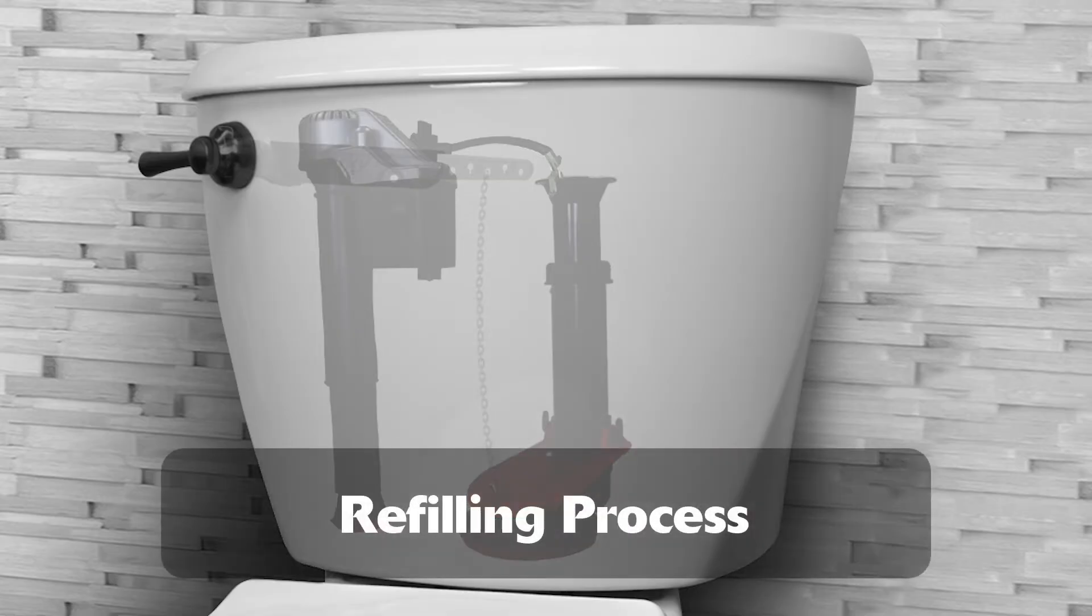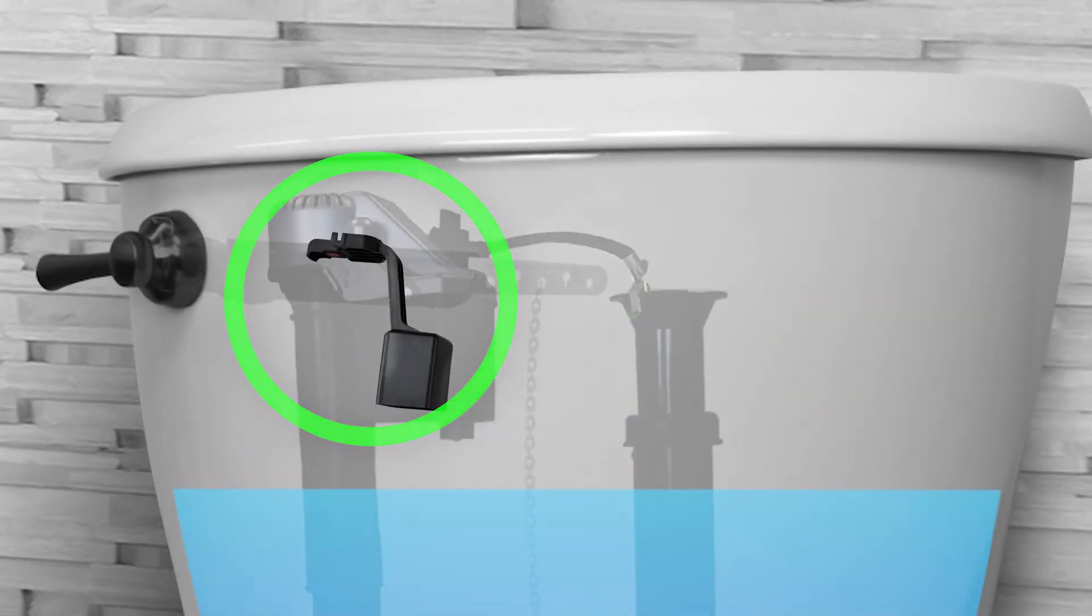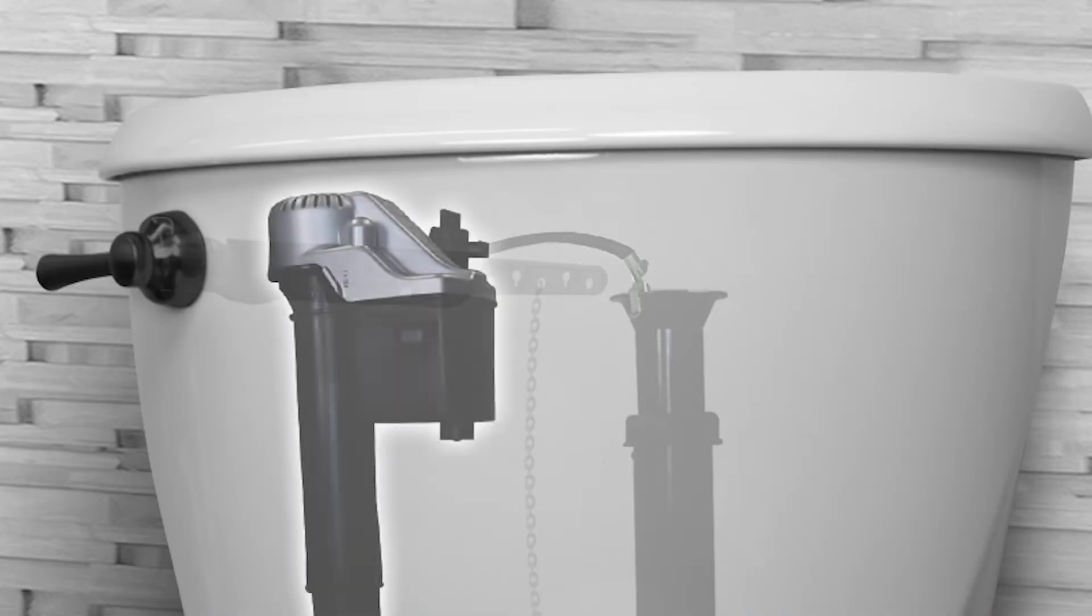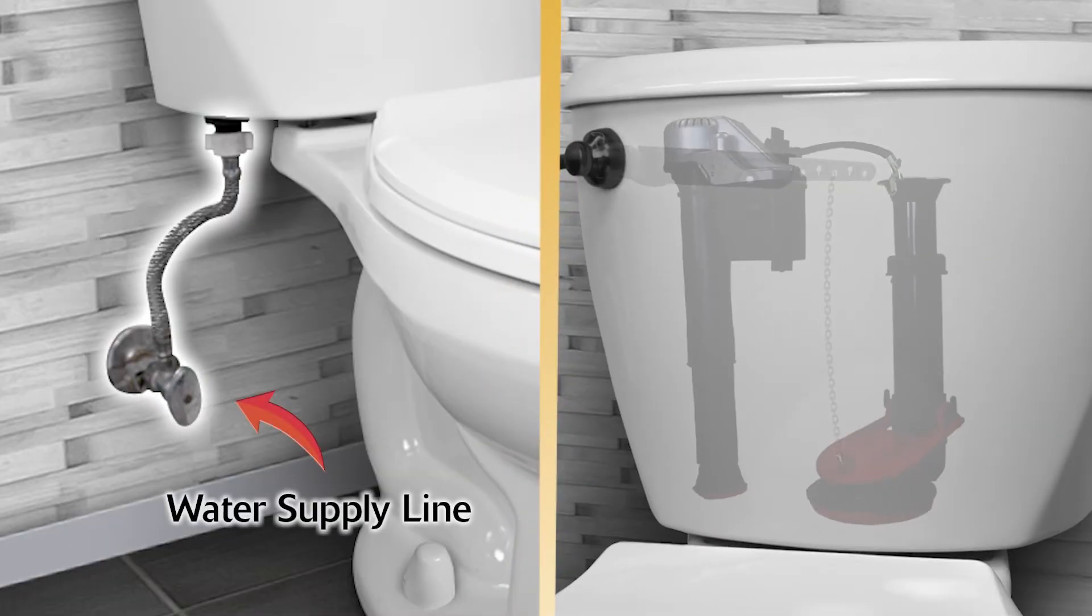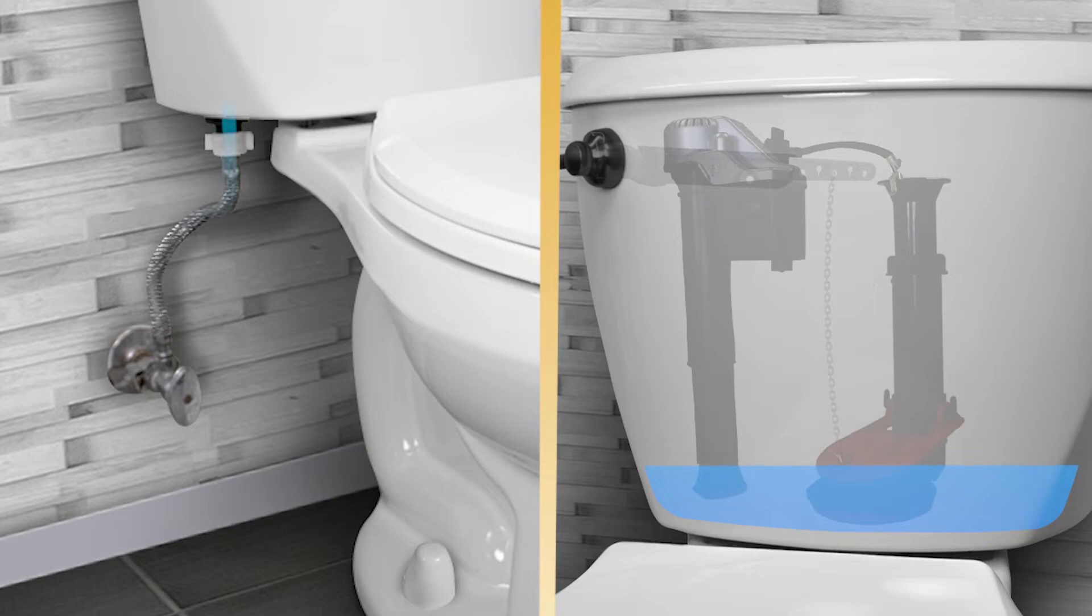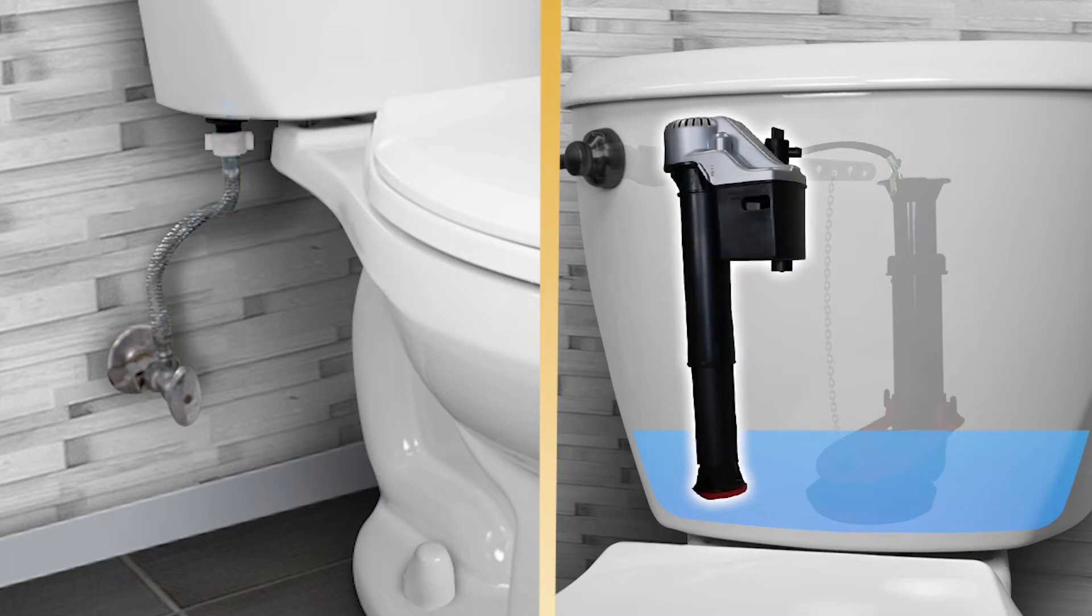How does a toilet refill on its own? After flushing, the water level drop in the tank causes the fill valve float to drop, turning the fill valve on. The water that refills the toilet tank comes from the water supply line, which draws water from plumbing pipes through the floor or wall. The water supply line is connected to the bottom of the fill valve under the toilet tank.